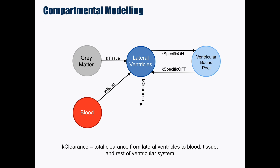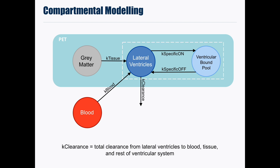We performed complemental modeling analysis to further understand where the signal in the lateral ventricles comes from — what tissues are contributing to the signal and how the signal clears — allowing for further understanding of the observed group differences. The final model was chosen based on its ability to reliably fit our data. The tissues that contribute to the ventricular PET signal include the blood and the surrounding brain tissues, and our model also accounts for specific binding within the lateral ventricles. The rate of clearance out of the lateral ventricles includes total clearance to the blood, surrounding grey matter, and to the rest of the ventricular system, because it is not possible to differentiate between these three clearance pathways.